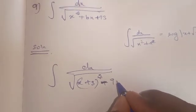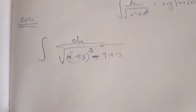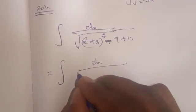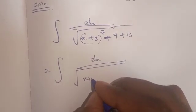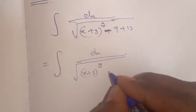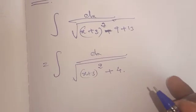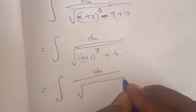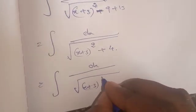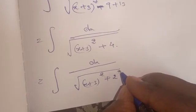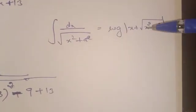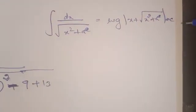...of (x plus 3) whole square plus 4. So the next integral is dx divided by square root of (x plus 3) whole square plus 4, which equals dx divided by square root of (x plus 3) whole square plus 2 squared. Using the formula: integral dx divided by root of (x squared plus a squared) equals log of modulus of x plus root of x squared plus a squared, plus c.